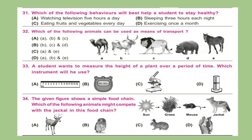Question 31: Which of the following behaviors will best help a student to stay healthy? Question 32: Which of the following animals can be used as means of transport? Question 33: A student wants to measure the height of a plant over a period of time. Which instrument will he use?